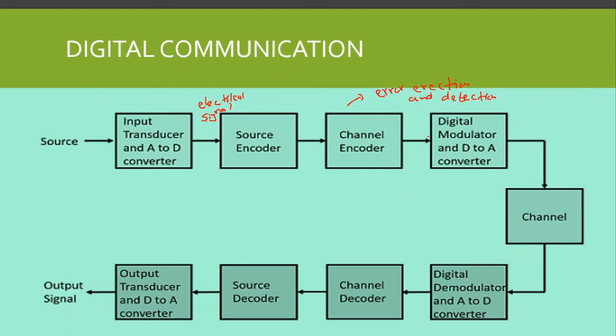Then we have the digital modulator and D-to-A converter. The digital signal is converted to an analog signal and modulation is performed.